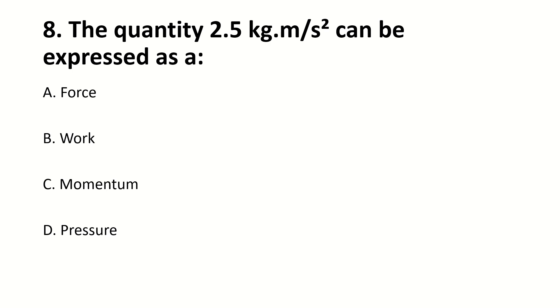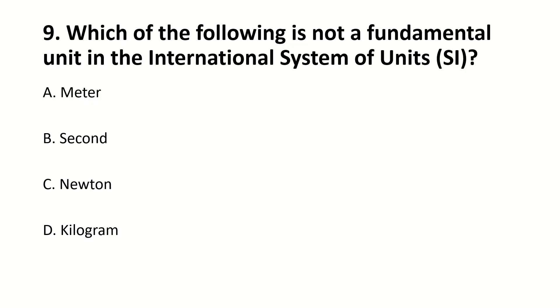The quantity 2.5 kg meter per second square can be expressed as? Answer is A, force. Why? Because kg we use for mass and meter per second square we use for acceleration. F equals ma, then force is equal to mass into acceleration. Which of the following is not a fundamental unit in international system of units? Answer is C, Newton.